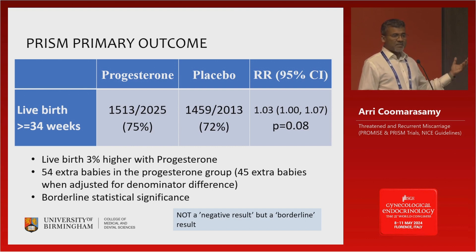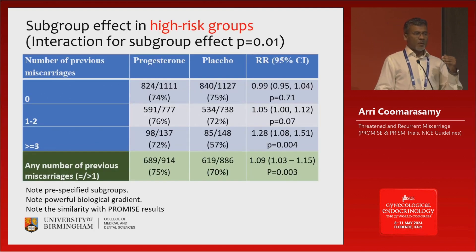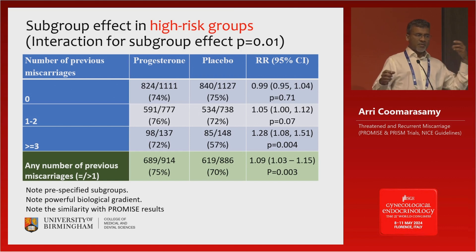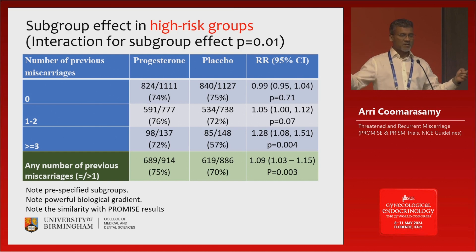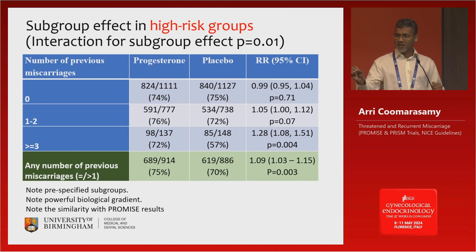This is suggesting progesterone is of potential benefit, but there is some statistical uncertainty about the findings. Then we moved on to look at a well-defined, pre-defined subgroup, which is where we asked the question: in women who have got the dual risk factors of a previous miscarriage — because when a woman has a miscarriage, she has an increased risk of future miscarriage; even one previous miscarriage increases her risk — and now they are bleeding in early pregnancy. This dual risk factor question was asked a priori.